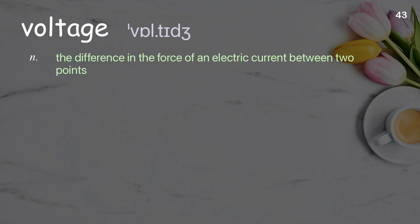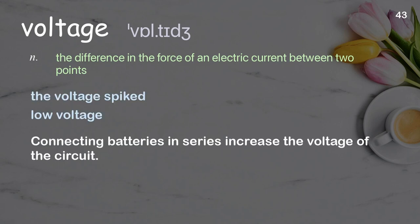Voltage. The difference in the force of an electric current between two points. Examples: the voltage spiked, low voltage. Connecting batteries in series increases the voltage of the circuit.